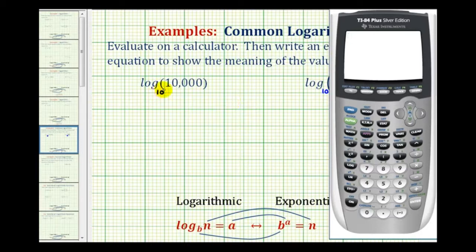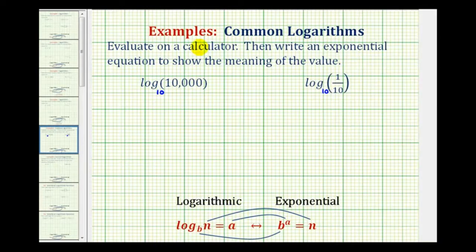To evaluate this first logarithm we just press log, and because this is common log we already know it's log base ten, so we just type in ten thousand, close parenthesis and press enter. This is equal to four. So this is the first part of the question.